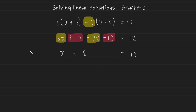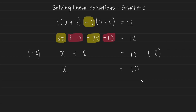To get rid of the plus 2, subtract 2 from both sides. The plus 2 cancels with the minus 2, leaving us with x, and 12 minus 2 gives us 10. So x equals 10. That's how you solve linear equations with brackets. In the next video we'll look at linear equations with variables on both sides — check that out if you want to learn how. Thanks guys, see you in the next video!